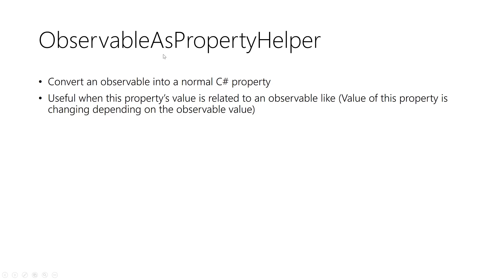Whenever any change happens to one of these values, we can use Observable as Property Helper. We create a field called 'can login', and simply when any change happens to username and password — if there is a valid email or a valid username and a valid password — the value of this property should be set to true, otherwise it should be false. So we use Observable as Property Helper in this situation, and we don't use a simple or normal C# property.